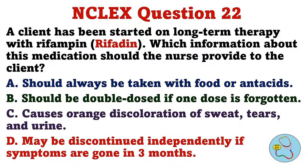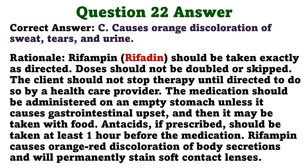A client has been started on long-term therapy with rifampin. Which information about this medication should the nurse provide to the client? A. Should always be taken with food or antacids. B. Should be double-dosed if one dose is forgotten. C. Causes orange discoloration of sweat, tears, and urine. D. May be discontinued independently if symptoms are gone in three months. The correct answer is C: causes orange discoloration of sweat, tears, and urine. Rifampin should be taken exactly as directed. Doses should not be doubled or skipped. The client should not stop therapy until directed to do so by a healthcare provider. The medication should be administered on an empty stomach unless it causes gastrointestinal upset, and then it may be taken with food. Antacids, if prescribed, should be taken at least one hour before the medication. Rifampin causes orange-red discoloration of body secretions and will permanently stain soft contact lenses.